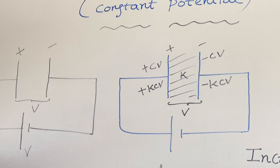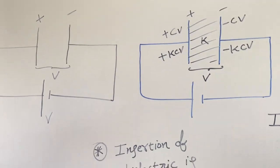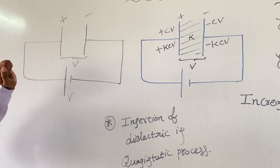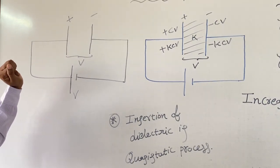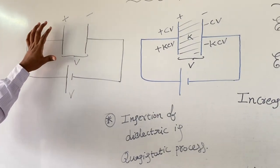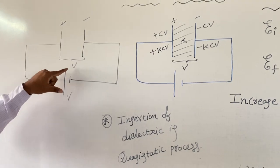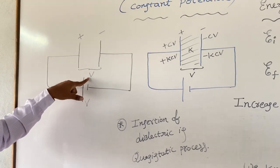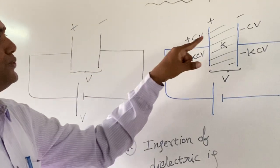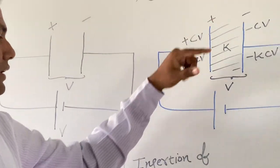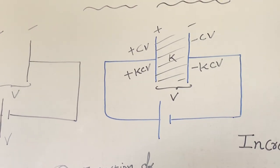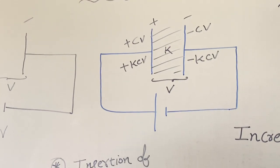Here we already know we have one capacitor — a parallel plate capacitor, initially uncharged, thereafter charged to the potential V. Later we introduced the dielectric by making the process quasi-static.